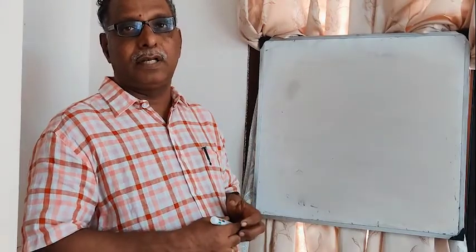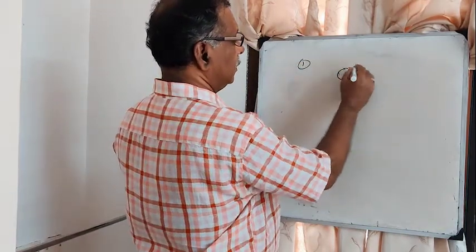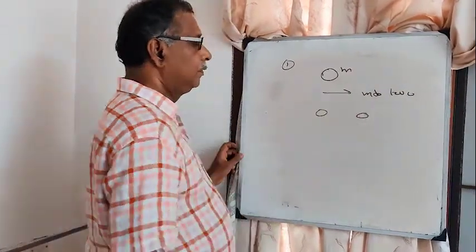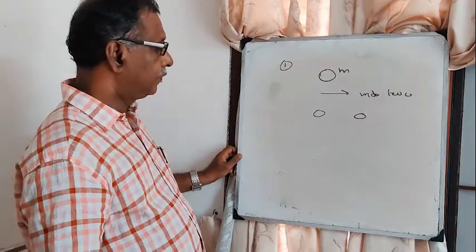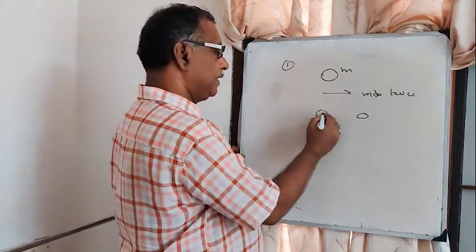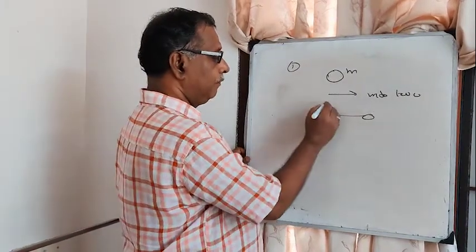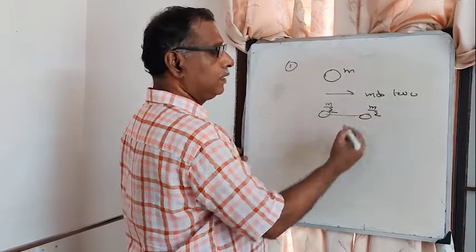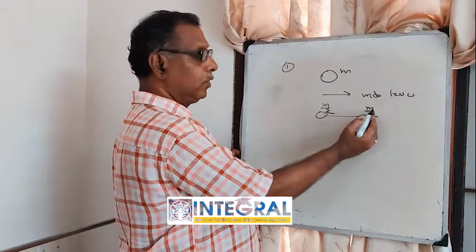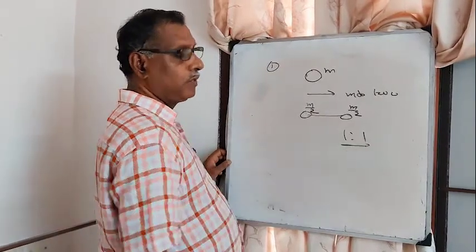If a mass M is split into two parts, the gravitational force between the parts is maximum when it is split equally — that is, when the ratio of the two masses is 1:1.